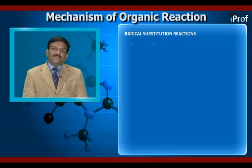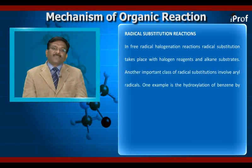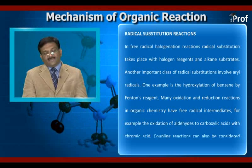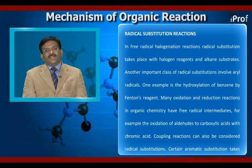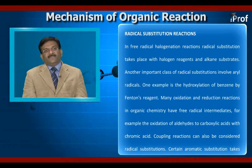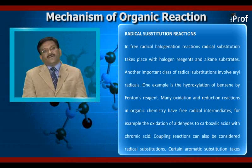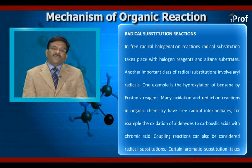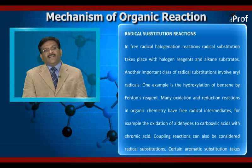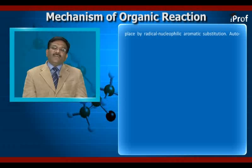In free radical halogenation reactions, radical substitution takes place with halogen reagents and alkene substrates. Another important class of radical substitutions involves aryl radicals. One example is the hydroxylation of benzene by Fenton's reagent. Many oxidation and reduction reactions in organic chemistry have free radical intermediates — for example, the oxidation of aldehydes to carboxylic acid with chromic acid. Coupling reactions and certain aromatic substitutions also proceed by radical nucleophilic aromatic substitution.